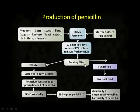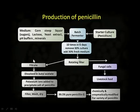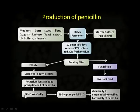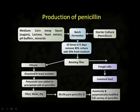The next step is a rotating filter. The fungal cells are separated out and given directly to livestock feed as they are nutrient-rich. The filtrate, rich with antibiotics, is dissolved in butyl acetate. In the precipitation process, potassium ions are added to precipitate the salt of penicillin. After cleaning — filtration, washing, and drying — we get 99.5 percent pure penicillin G. The resulting penicillin can be chemically and enzymatically modified to make a variety of penicillins with slightly different properties.